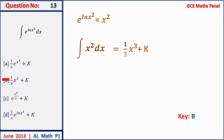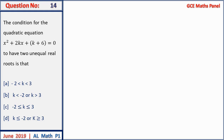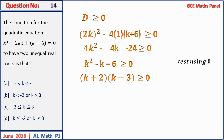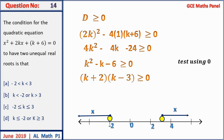Question 14: the condition for the quadratic equation to have two real equal roots is that the discriminant b² − 4ac ≥ 0. We get 4k² − 4k − 24 ≥ 0, simplifying to k² − k − 6 ≥ 0. The roots are k = −2 and k = 3. Testing the inequality, the region that satisfies it is k < −2 or k > 3. The answer is D.